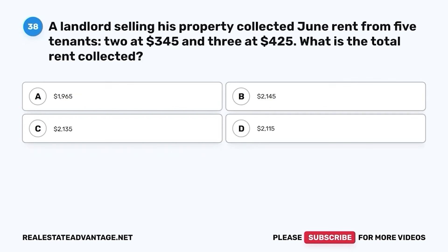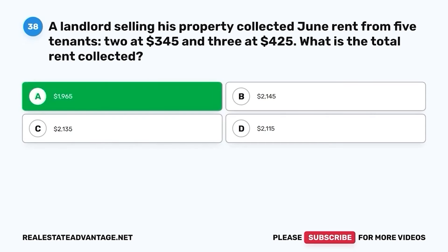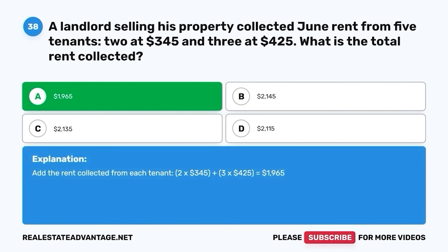Question 38. A landlord selling his property collected June rent from five tenants, two at $345 and three at $425. What is the total rent collected? A. $1,965. B. $2,145. C. $2,135. D. $2,115. The correct answer is A. $1,965. Add the rent collected from each tenant: two times $345 plus three times $425 equals $1,965.